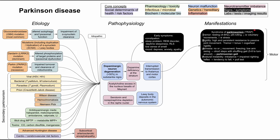The most recognizable symptoms are the motor symptoms, captured by the TRAP mnemonic. T stands for tremor — a resting tremor between 4 and 6 Hz, described as a pill-rolling tremor, which gets worse with stress and slightly better with voluntary movement. R stands for rigidity — high persistent resistance to passive joint movement. Combined with the tremor, this creates cogwheel rigidity, where bending the patient's arm open happens in spurts, like a cogwheel.